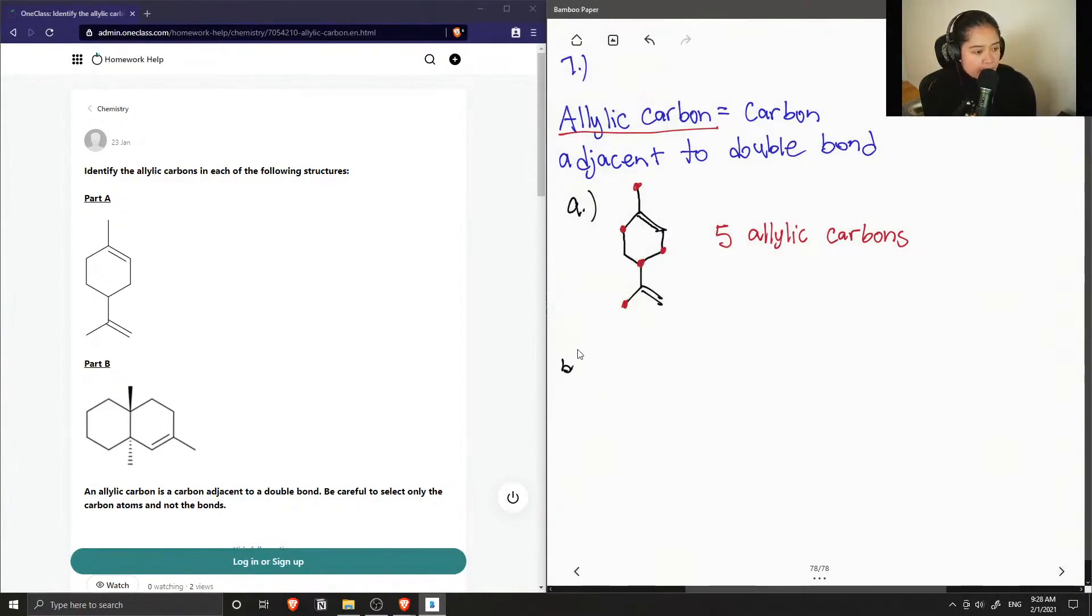And now let's do the same thing for part B. And they showed some stereochemistry here as well. And we have just one double bond here. So the carbons that are adjacent to this double bond would be this carbon, and this carbon, and also the carbon in the methyl group. So for this molecule, we have three allylic carbons.